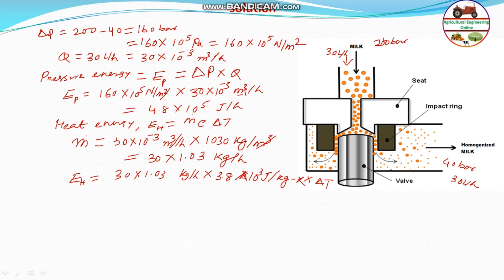For perfect conservation of energy, E_H must equal E_P — pressure energy equals heat energy. Balancing both sides: 4.8 into 10 to the power 5 joules per hour equals 30 into 1.03 into 3.8 into 10 to the power 3 joules per kg per Kelvin, multiplied by delta T.